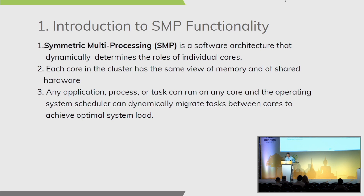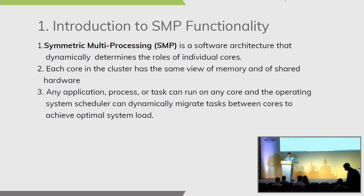Each core in the cluster has the same view of memory and of the shared hardware. Any application, process, or task can run on any core, and the operating system scheduler can dynamically migrate tasks between cores to achieve optimal system load — this is where IRQ balance or the load balancer defined by the scheduler comes in. There is a per-CPU IRQ and a local timer for each CPU; these two are the basic requirements to make sure the second core is up.